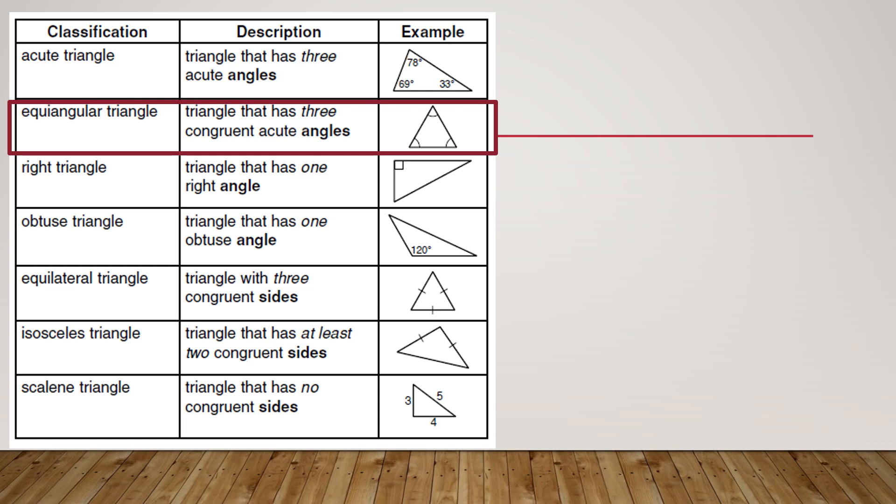An acute triangle has three acute angles. An equiangular triangle has three congruent acute angles. Those will always be 60 degrees, because 180 divided by 3 is 60.